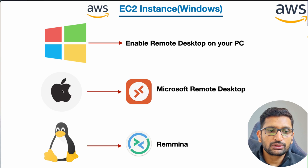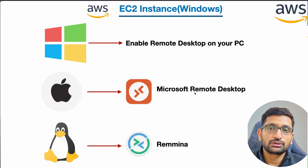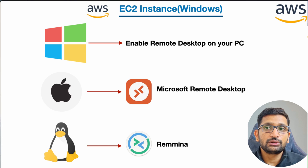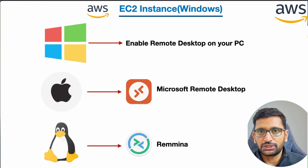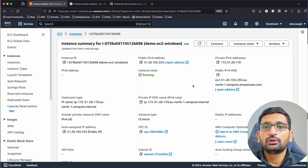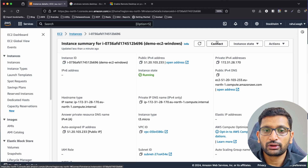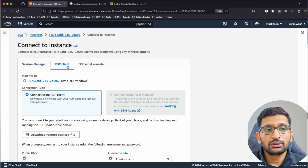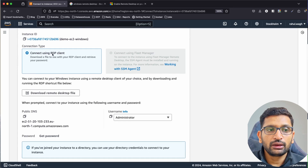I'm on a Mac laptop, so I'll use Microsoft Remote Desktop to access our Windows machine. The steps are essentially identical across platforms. You'll need the public IP or public DNS of your EC2 instance. On the instance page, click 'Connect' on the right-hand side. Here we have three options: Session Manager, RDP Client, and EC2 Serial Console. I'll use the RDP Client.